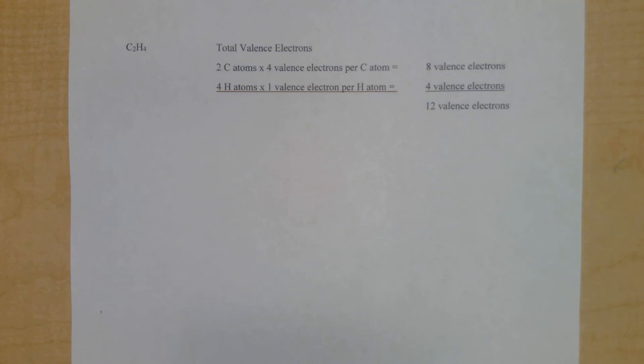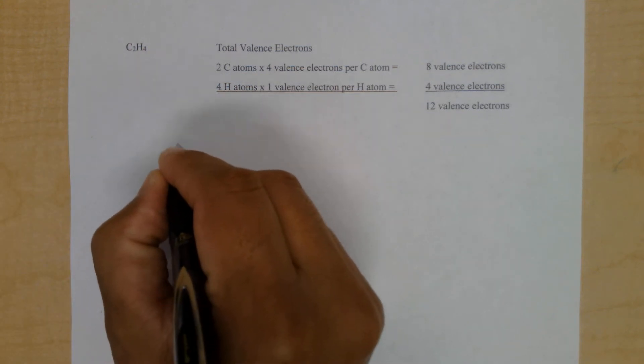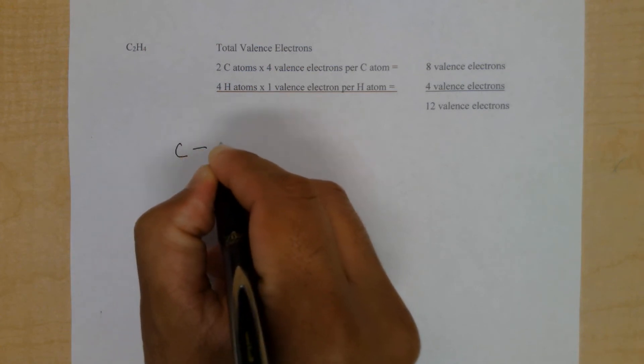You'll notice that ethene does not have one central atom like we've seen in earlier videos. In ethene, like we saw in ethane in an earlier video, we see a short chain of carbon atoms. We'll draw the two carbon atoms and draw the connection between the two carbon atoms.